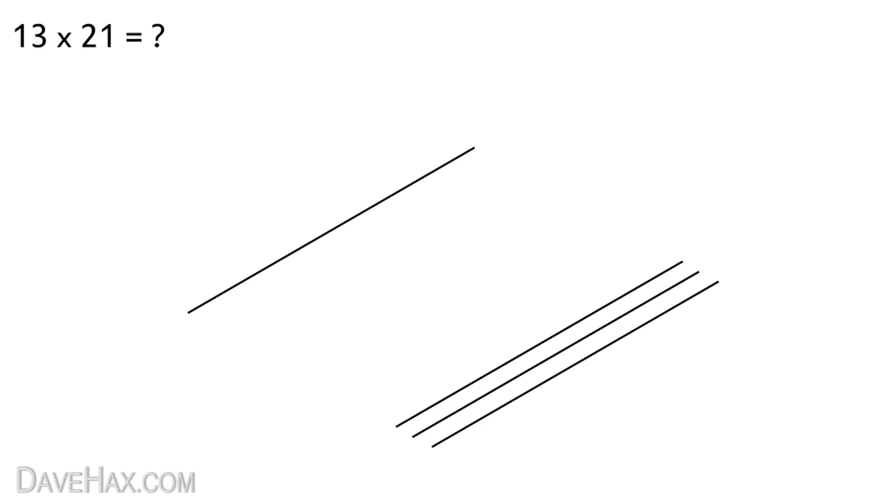After the multiplication sign the first number we have is 2 so we draw two lines next to each other from here to here. And the final digit is 1 so we draw one line from here to here. That's the first part complete and it should look something like this.